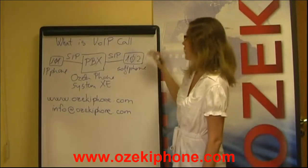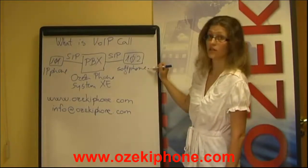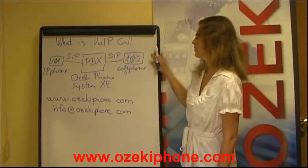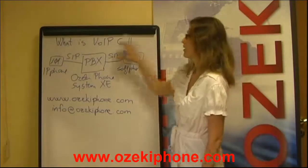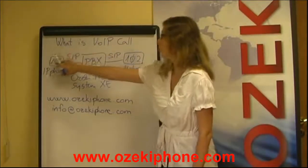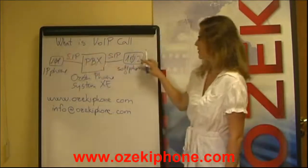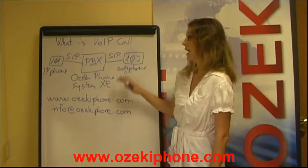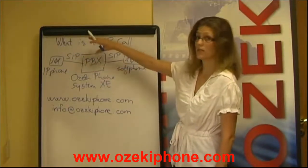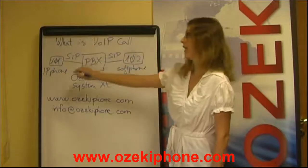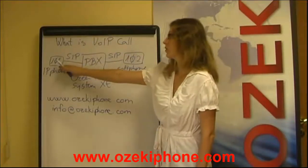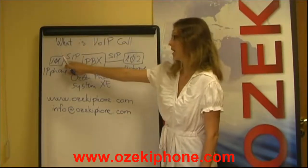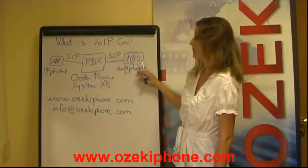When the soft phone answers the call, the phone line is established between the two extensions. The PBX exits the call and the call is made peer-to-peer between the IP phone and the soft phone.